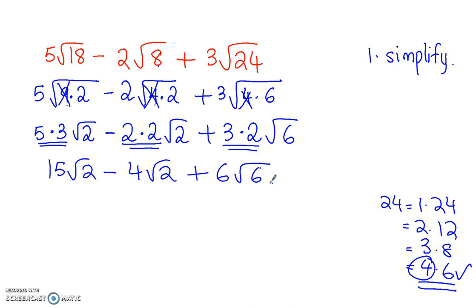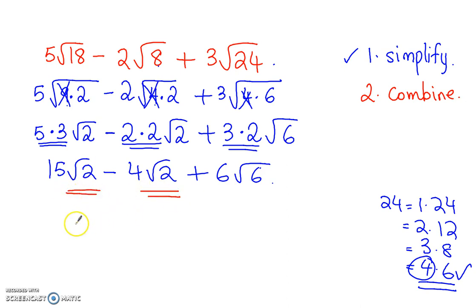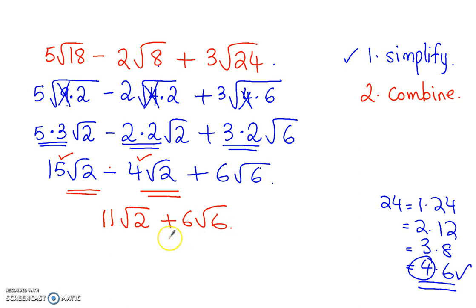We just finished step number 1 — we simplified the original expression to get 15 radical 2, minus 4 radical 2, plus 6 radical 6. Now we do step number 2: combine like radicals. Radical 2 and radical 2 are like radicals, so we combine the coefficients: 15 minus 4 is 11 radical 2, plus 6 radical 6, and you're done.